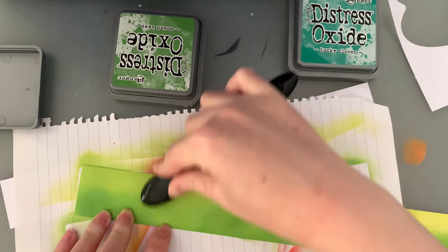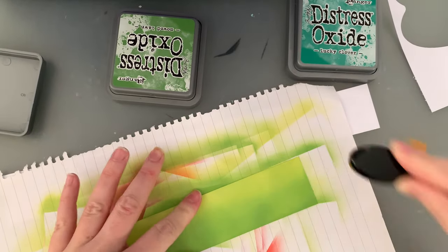So I just go over it back and forth like I do with all of my ink blending, and this is going to be one of my layers of grass that goes around the bottom of my little plastic dome.